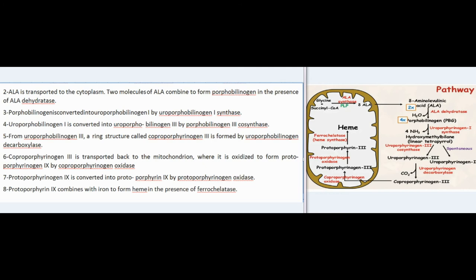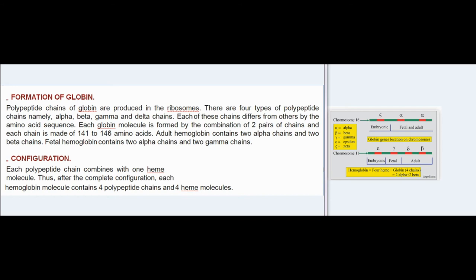Step 4: uroporphobilinogen I is converted into uroporphobilinogen III by porphobilinogen III cosynthase. Step 5: from uroporphobilinogen III, a ring structure called coproporphyrinogen III is formed by uroporphobilinogen decarboxylase. Step 6: coproporphyrinogen III is transported back to the mitochondrion where it is oxidized to form protoporphyrinogen IX by coproporphyrinogen oxidase. Step 7: protoporphyrinogen IX is converted into protoporphyrin IX by protoporphyrinogen oxidase. Step 8: protoporphyrin IX combines with iron to form heme in the presence of ferrochelatase.